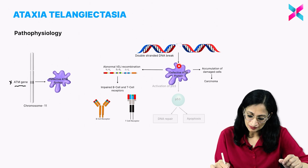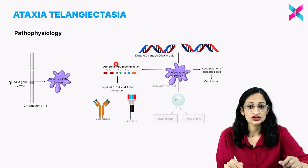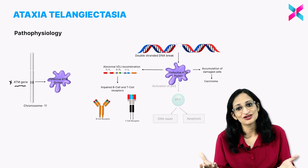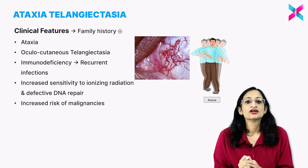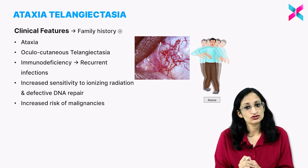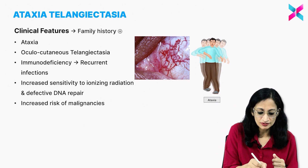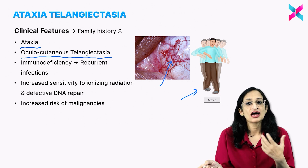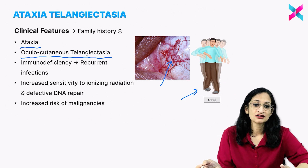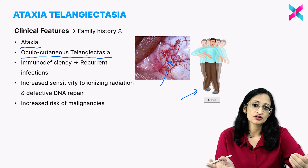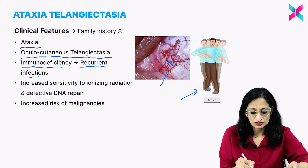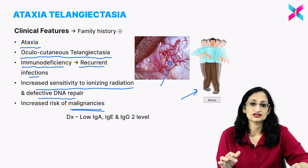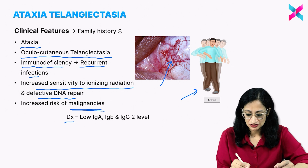Ataxia telangiectasia has autosomal recessive inheritance, so family history may be positive. Clinical features include ataxia — the person is seen swaying from side to side — and oculocutaneous telangiectasia with dilated blood vessels in the conjunctiva and sometimes on the skin. These changes appear with age and may not be present in early childhood. Immunodeficiency leads to recurrent infections, increased sensitivity to ionizing radiation, defective DNA repair, and an increased risk of malignancies. Diagnosis is suggested by low IgA, IgE, and IgG2 levels.